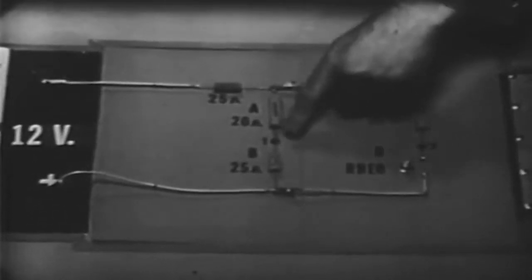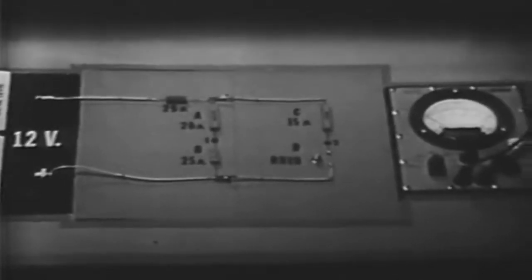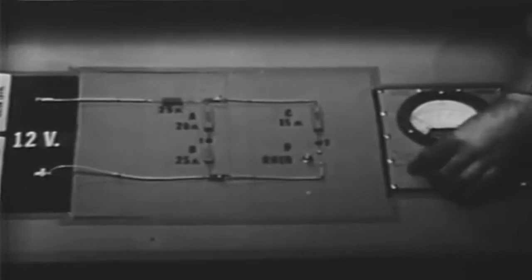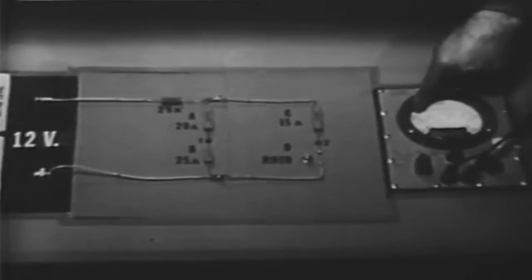Now we have two series circuits in parallel with each other. Each circuit is a parallel branch. Let's measure the voltages. I set the meter to DC volts, the range switch to 10, and we will read the 0 to 10 DC scale.